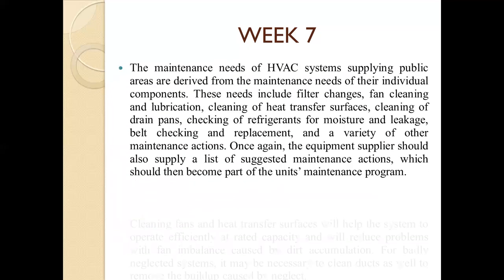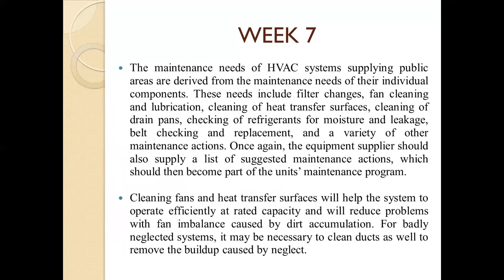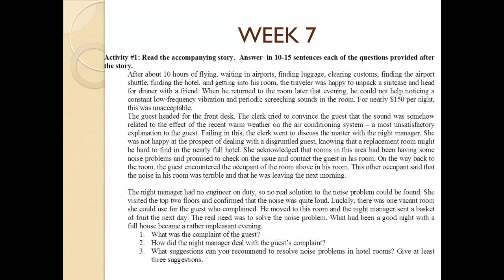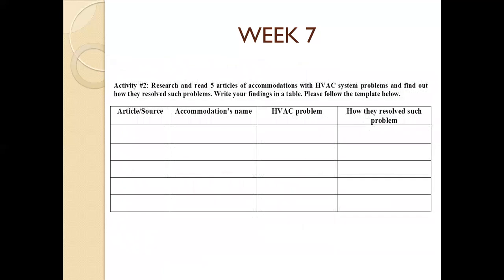For Week Seven activities, there are two assignments. Activity One requires reading an accompanying story and answering three questions in 10 to 15 sentences each. Activity Two involves researching five articles related to accommodation problems and finding out how those problems were resolved, then recording findings in a table.